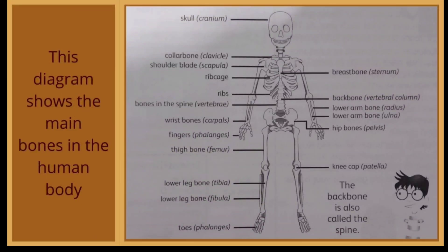This diagram shows the main bones in the human body. Now look at the picture. Those main bones are skull, collarbone, shoulder blade, ribcage, ribs, bones in the spine, wrist bones, finger, thigh bone, lower leg bone, tooth, breast bone, back bone, lower arm bone, hip bones, and kneecap.